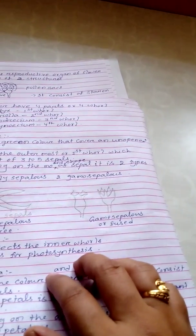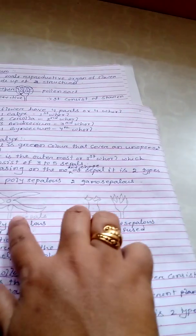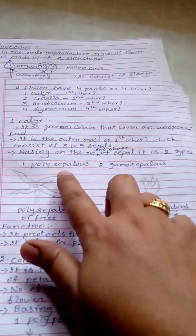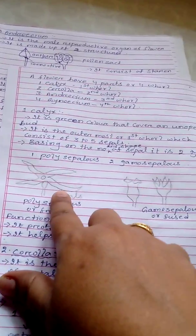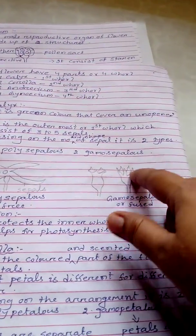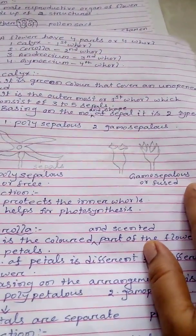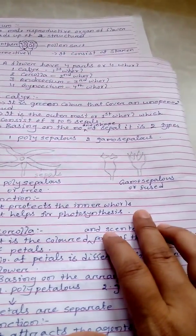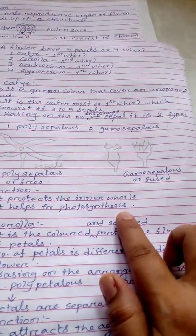Based on the number and shape of the sepals, the flower is divided into two types: one is polysepalous and another one is gamosepalous. In polysepalous, the sepals are free. In gamosepalous, the sepals are fused together and form a dome-like structure. The function of the calyx is to protect the inner whorls, and as it is green in color it contains chlorophyll and also helps in photosynthesis.